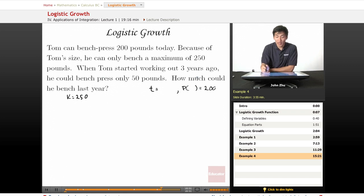When Tom started working out three years ago - so three years ago will be our initial condition. So t equals 0, p of 0 is going to equal 50 pounds.